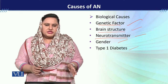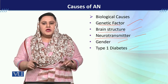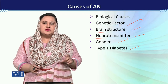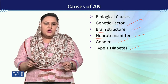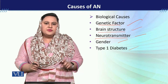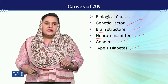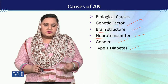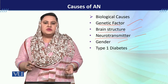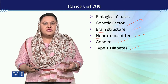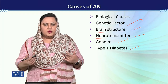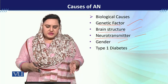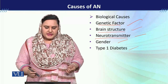Then we will talk about gender. Gender-wise, it is said that this problem is more prevalent in females. In males, the prevalence is very low. However, males whose sexual orientation is toward homosexuality have been observed to be very much concerned about their body shape and weight, and some cases of anorexia nervosa have been reported among them.